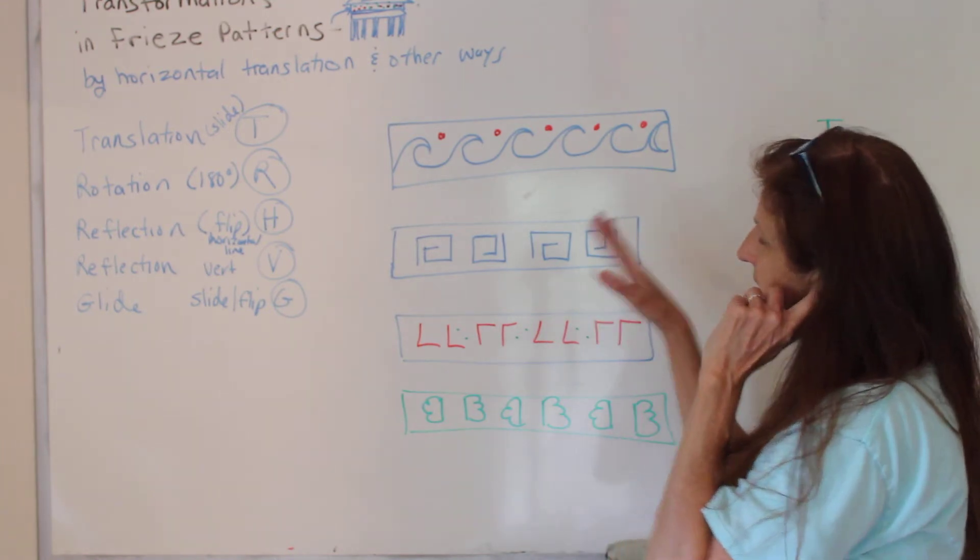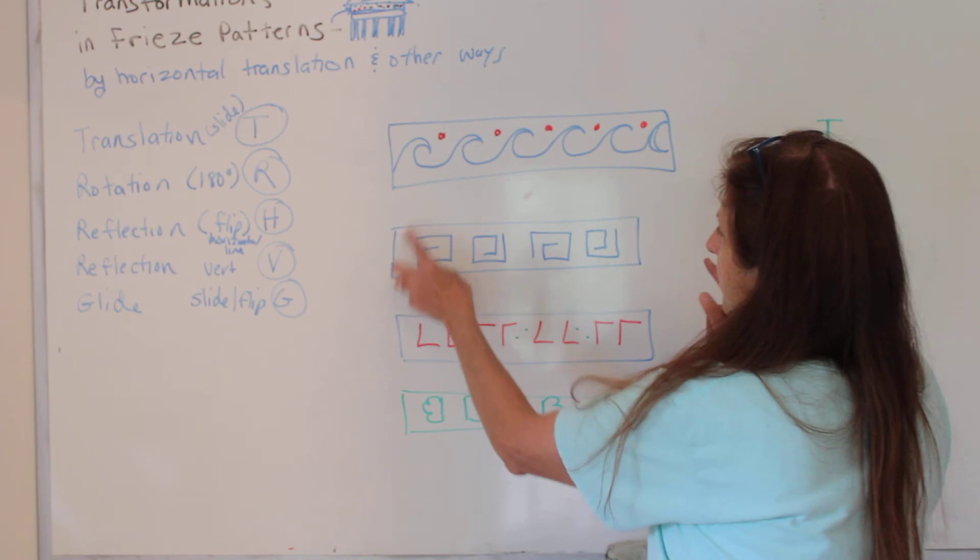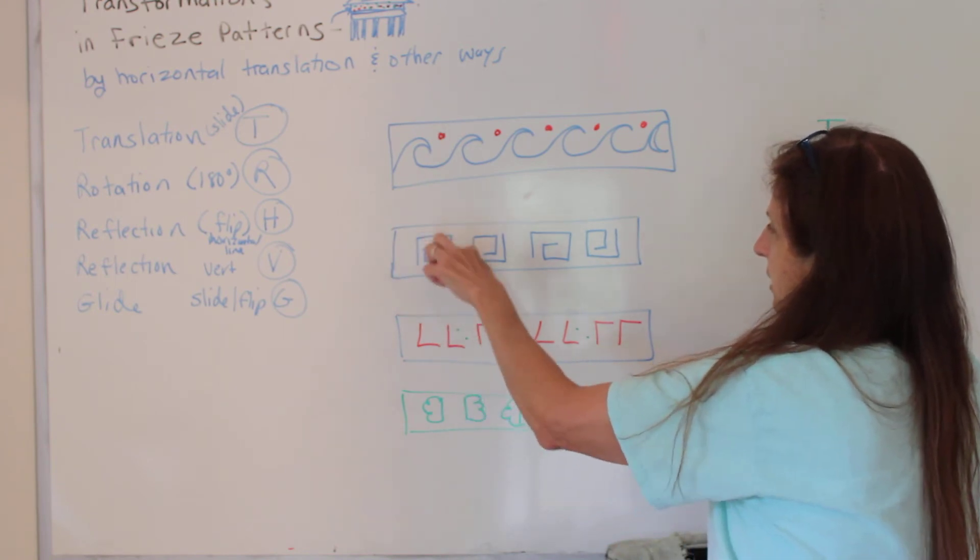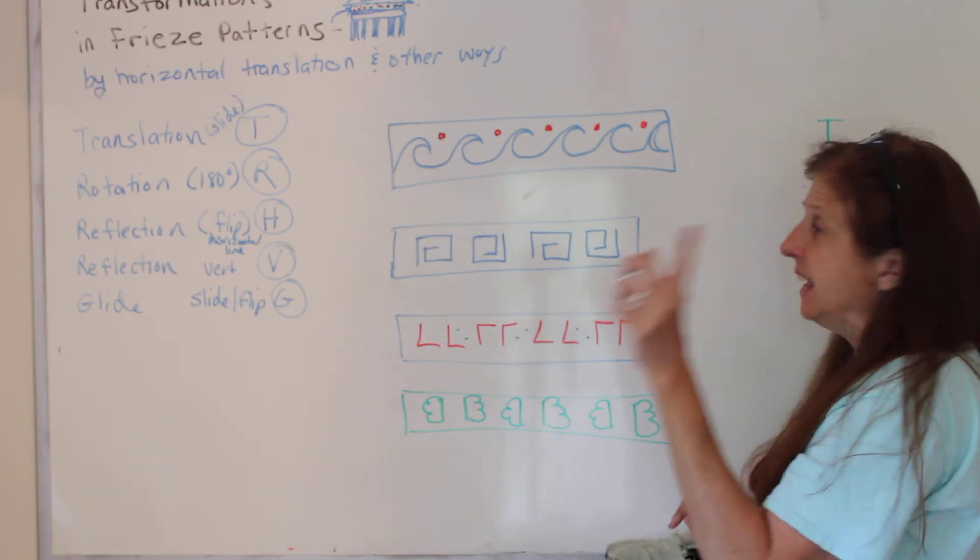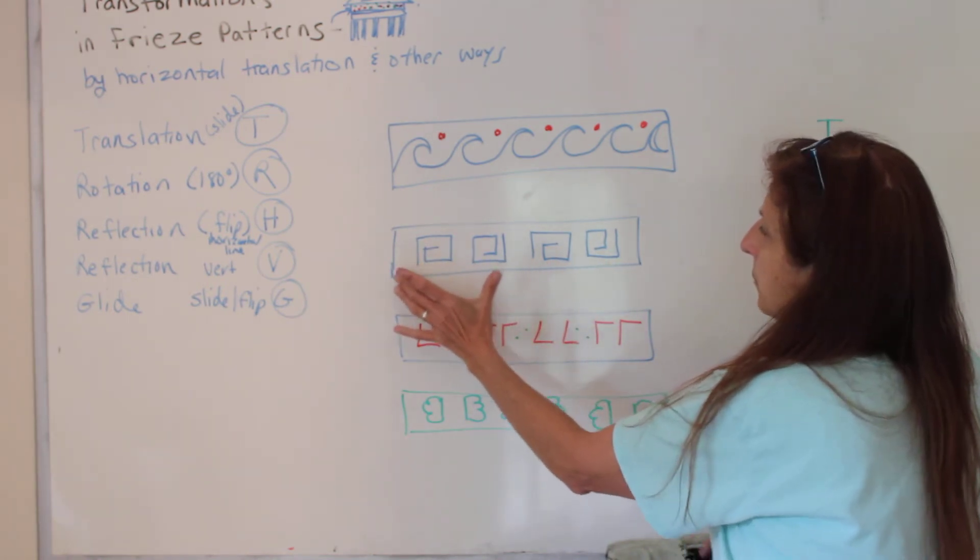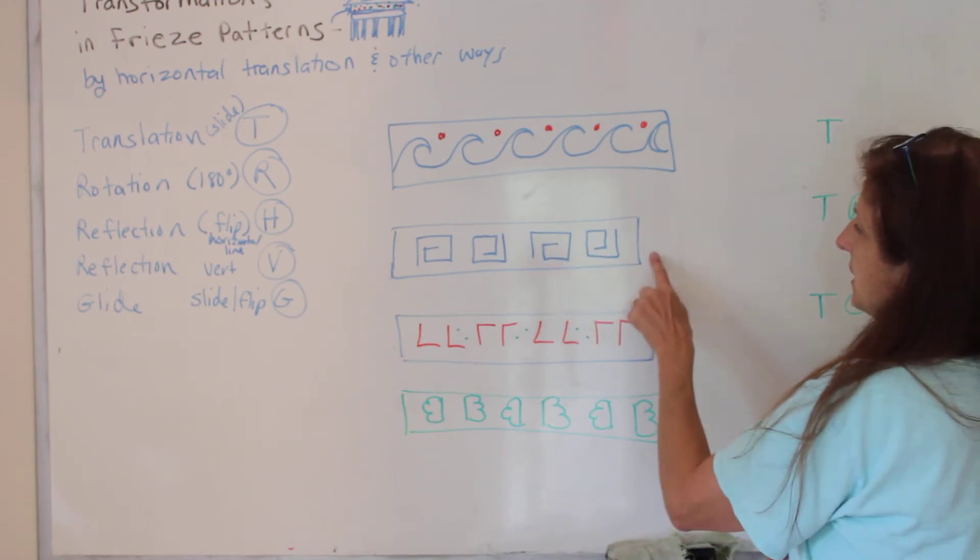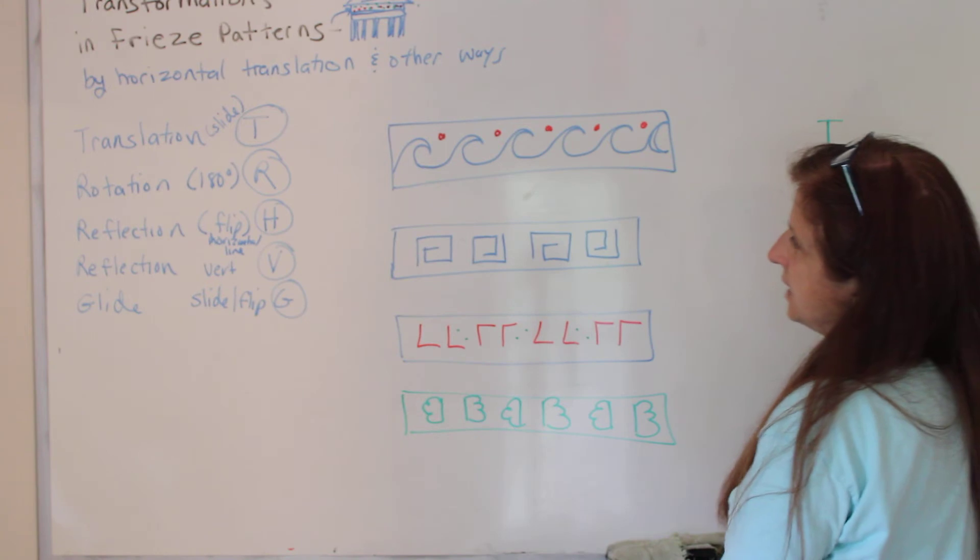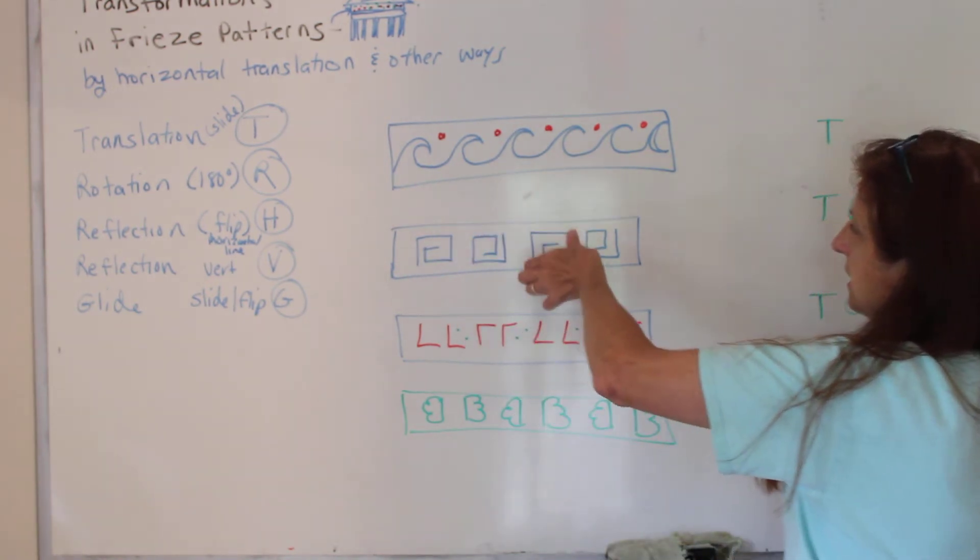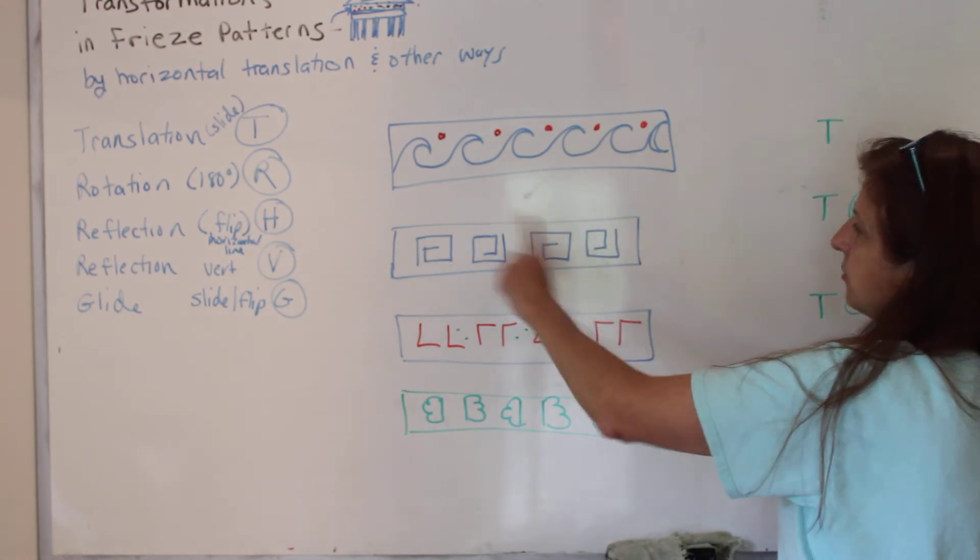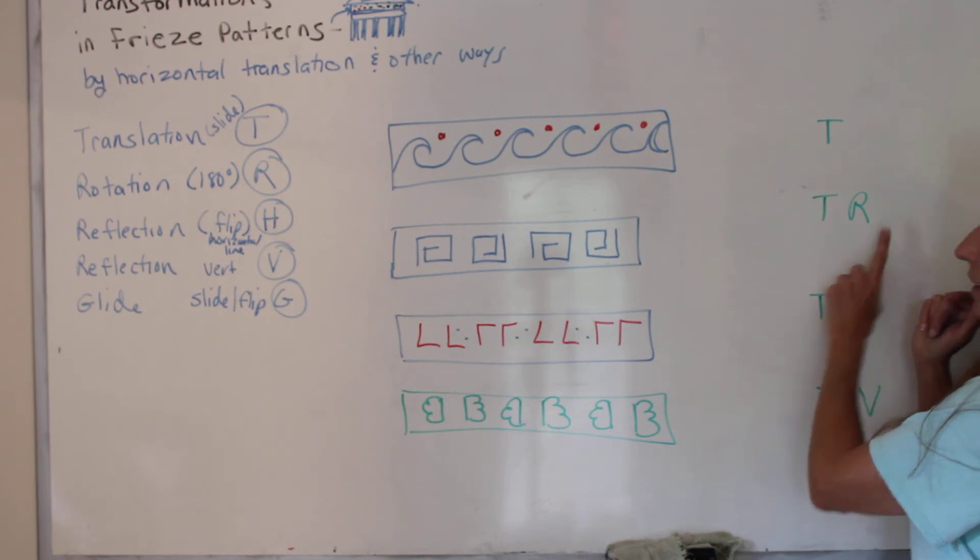Now, some of these others could have more than what I'm pointing out to you. So this one, I got this spiral that starts here and goes around, and then here it goes around. So can this be a slide? Yes. If we take two of them, we can take these two and slide them down onto those two. So this is a translation. Can we rotate it 180 degrees? Yes. It keeps rotating 180 degrees. So it's both a translation and a rotation.